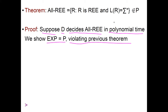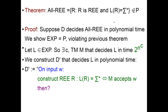Let's pick a language L in EXP. So there exists some constant C and a machine M that decides L in time 2 to the power n to the C. We're going to construct a machine D' that decides L in polynomial time, under the assumption that all-RE↑ is in P.